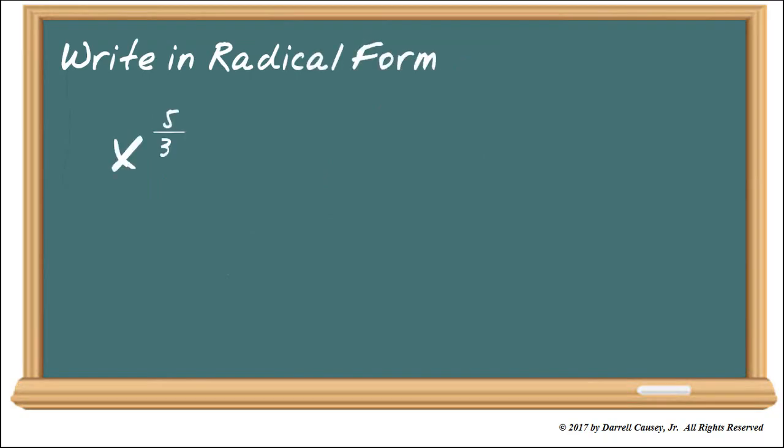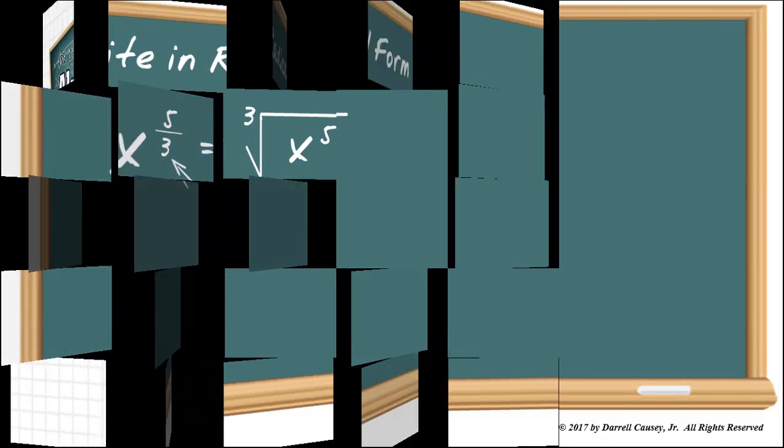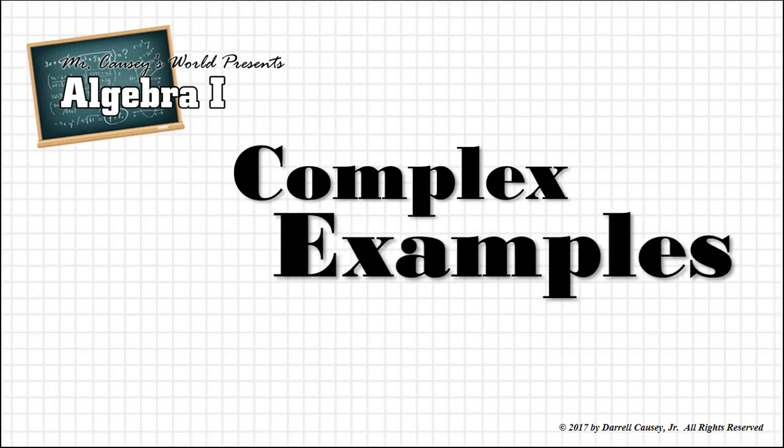Now let's go the other way. Let's write in radical form. We know that x to the 5 thirds, we can write the radical sign and x. Put the 5 in as the power and the 3 in as the index or root.